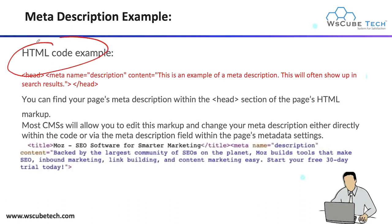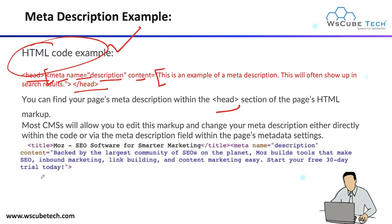Now, what is the HTML code for this meta description? In the head section, you write meta description in the form of: meta name='description' content='...'. Whatever description you want to write, you write it in the content attribute — for example, 'This is an example of the meta description.' This will often show up in the search result. You can find your page meta description within the head section. Most CMS platforms will allow you to add this markup and change your meta description either directly within the code or through the meta description field.